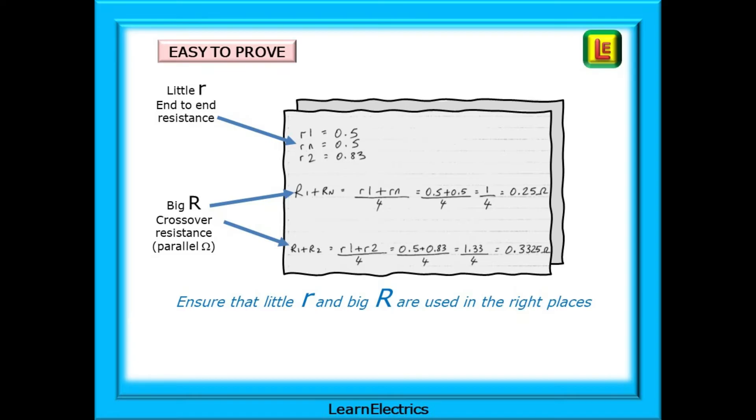Write down the test results as we know them, little R1, Rn and R2. Now, use the following two formulas. Big R1 plus big Rn is equal to little R1 plus little Rn, and then divide this by 4. With our example, this gives a value of 0.25 ohms.